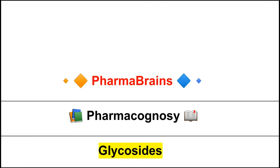Hello students, welcome back to our YouTube channel Pharma Brains Student. Today's video we are going to discuss our pharmacognosy subject topic: glycosides — the next part of our pharmacognosy subject. Our first topic was alkaloids, and we discussed about glycosides first part which covered introduction and classification.